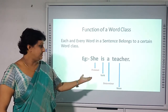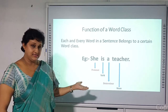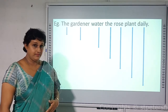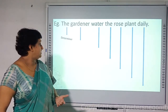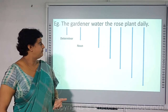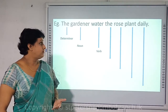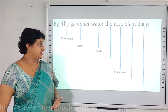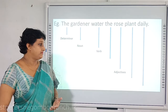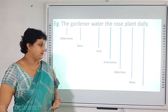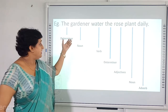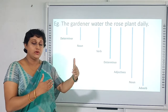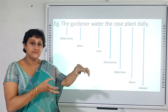We can also say 'a' is a determiner and 'teacher' is a noun. Moving on to another example: 'The gardener watered the rose plant daily.' Here, 'the' is a determiner, 'gardener' is a noun, 'watered' is a verb, 'rose' is an adjective, 'plant' is a noun, and 'daily' is an adverb. Each and every word in this sentence belongs to a word class — the eight parts of speech.